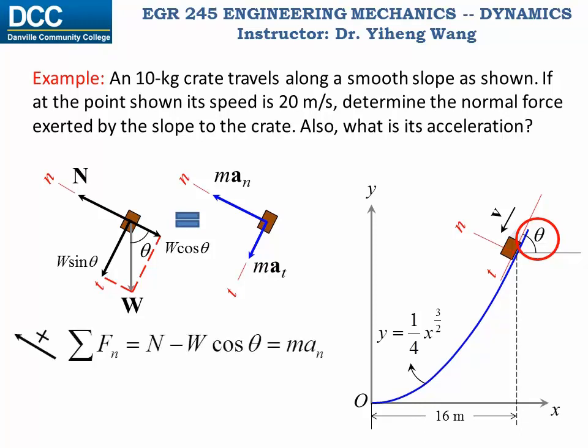Now we can write our equations of motion. Along the normal direction, the resultant force equals N minus w·cos(θ), and that equals m·a_n. Along the tangential direction, the resultant force equals w·sin(θ), and that equals m·a_t.